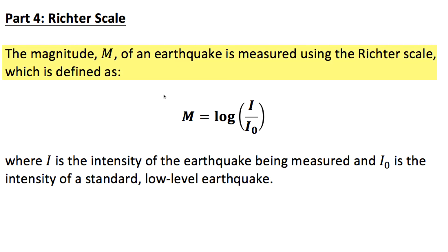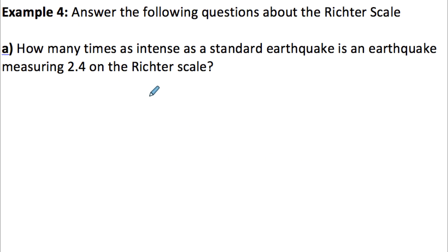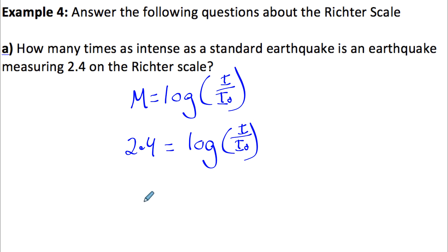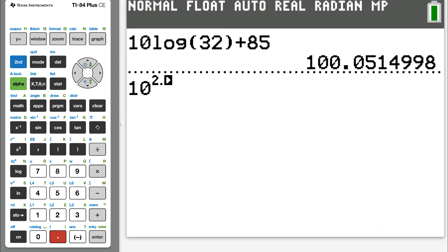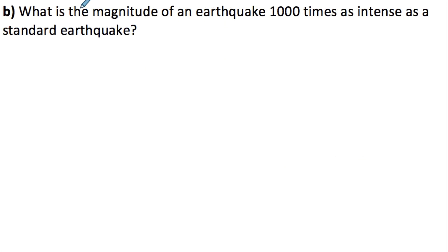Our last example uses the Richter scale: magnitude M equals log(I/I₀), where I is the intensity of the earthquake being measured and I₀ is the intensity of a standard low-level earthquake. How many times as intense as a standard earthquake is one measuring 2.4 on the Richter scale? Substituting: 2.4 equals log(I/I₀). Converting to exponential form: 10 to the 2.4 equals I/I₀, which is approximately 251. So it's about 251 times as intense.